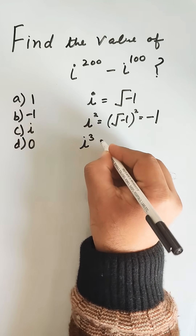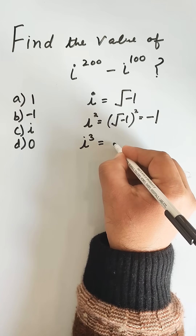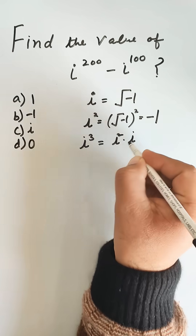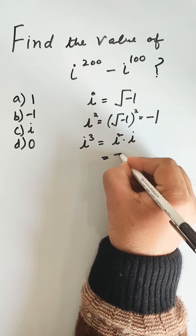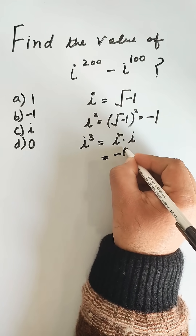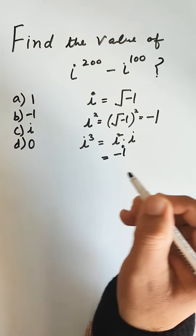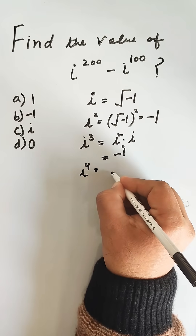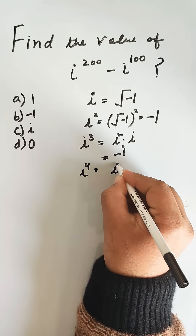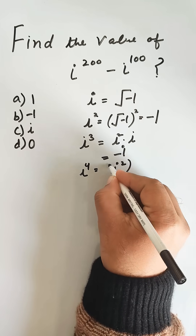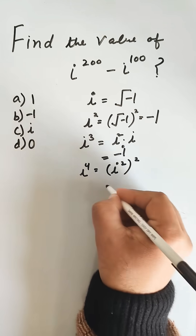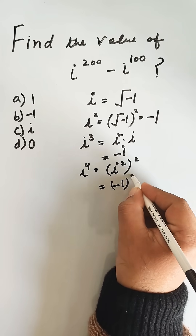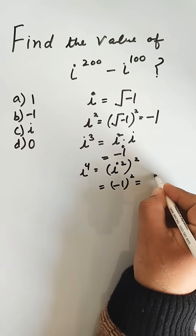Iota cube is equal to iota square into iota. Iota square is minus 1, so iota cube equals minus iota. Iota power 4 will be equal to iota square whole square, and iota square is minus 1, so minus 1 square equals 1.